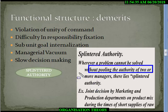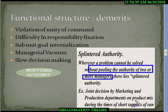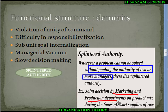When you have to pull the authority of two or more managers, that leads to splintered authority. For example, in a product mix situation or at the time of short supplies of raw material, you require a joint decision by both the marketing and production departments.